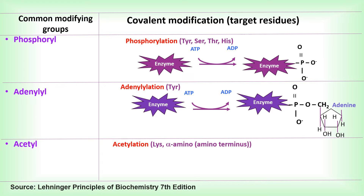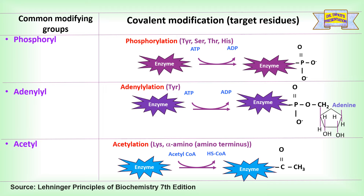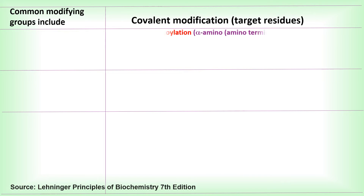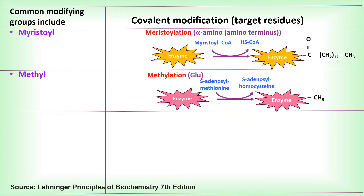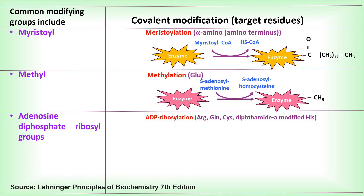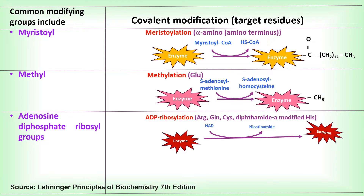Acetylation occurs on lysine and alpha-amino N-terminal groups, with acetyl-CoA providing the acetyl group. Myristoylation occurs on alpha-amino N-terminal groups, with the myristoyl group transferred from myristoyl-CoA. Methylation occurs on glutamic acid residues, with the methyl group transferred from S-adenosylmethionine. ADP-ribosylation occurs on arginine, glutamine, cysteine, and diphthamide residues, with the ADP-ribosyl group transferred from NAD to the enzyme.